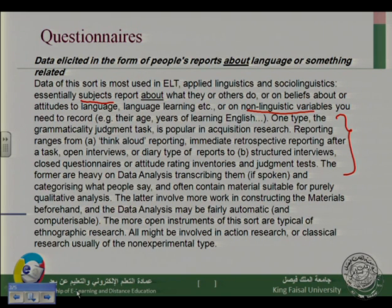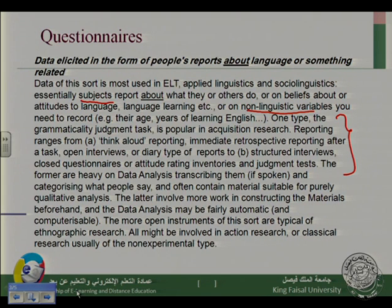The Grammaticality Judgment Task: you give a task to your students and then ask them to judge whether a sentence is grammatically correct or not. From this task, you can know whether your students have learned or acquired grammar. Think-Aloud Reporting is another tool — you ask your students to think aloud while they are doing a task. For example, with a vocabulary task, students start to think aloud: 'I am thinking about the suitable word here. Is the correct answer A or B? No, A is not right because it is a noun and I need an adjective.'